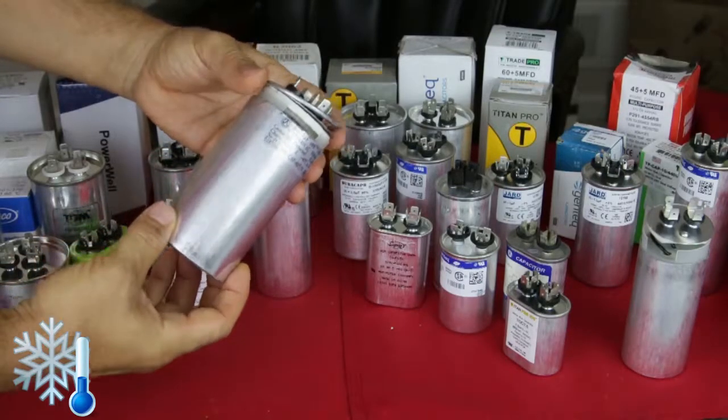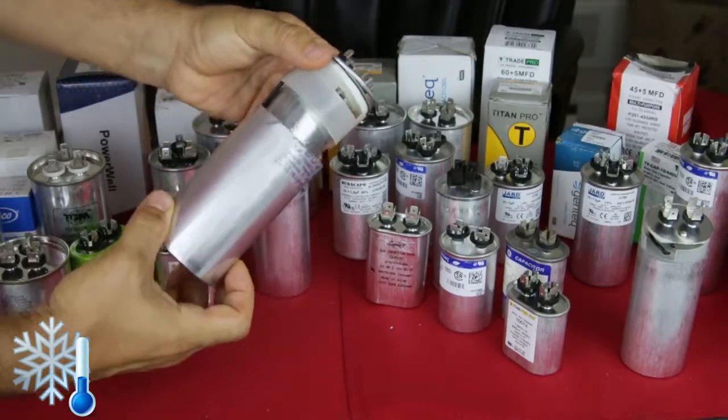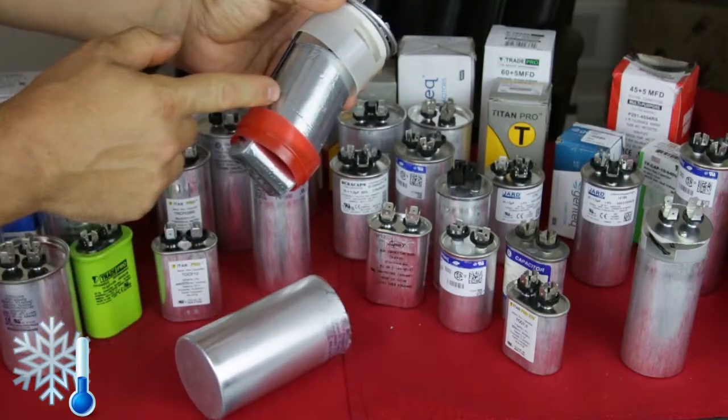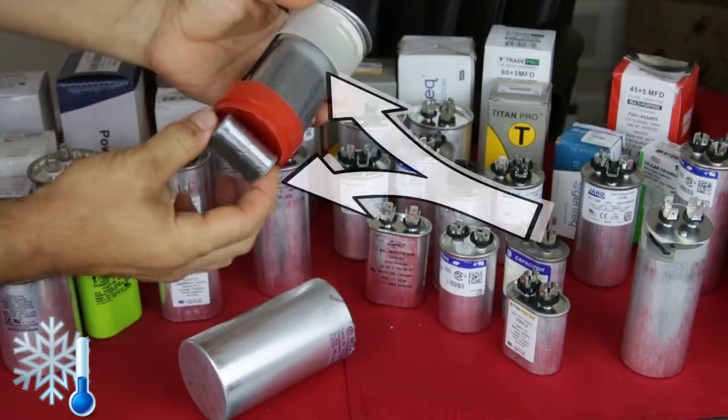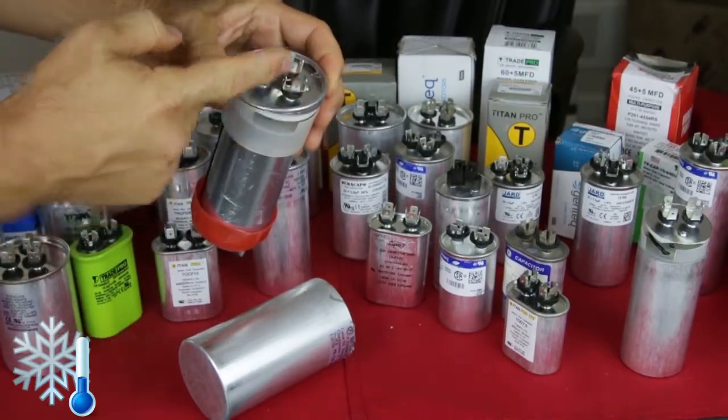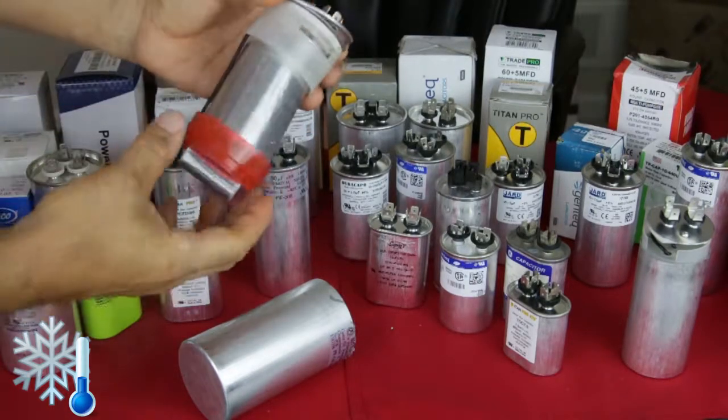In the dual capacitor what we see is the three terminals on top. If you open it we're going to see actually two single capacitors connected. They're going to have the common terminal and each one is going to have the side for the fan or for the compressor.